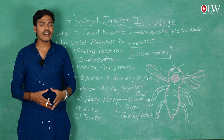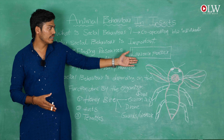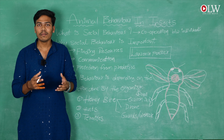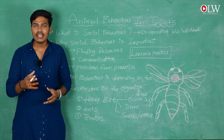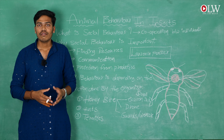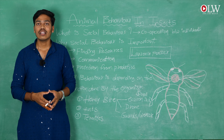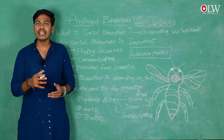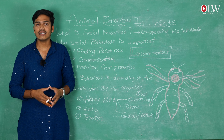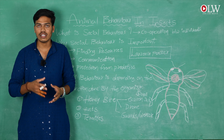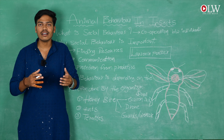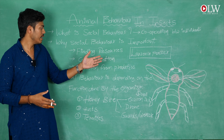The social behavior in insects was discovered by scientist Lawrence Packer. Why is social behavior important? Simply, to communicate from one individual to another, or between two groups or colonies. It is also important to find food sources, water resources, nests, and hives — these are all the key aspects involved in social behavior in insects.